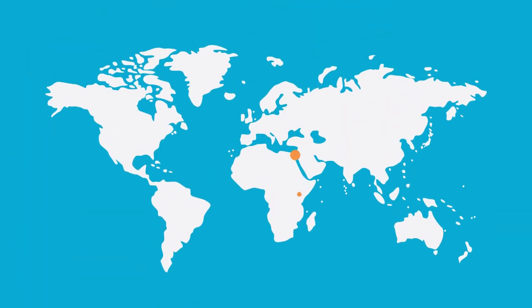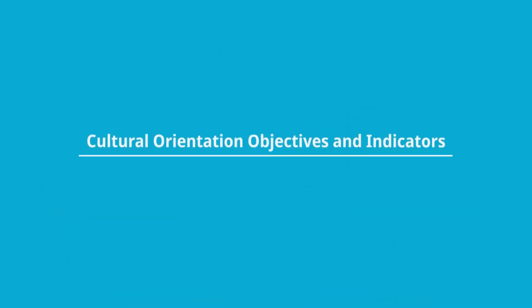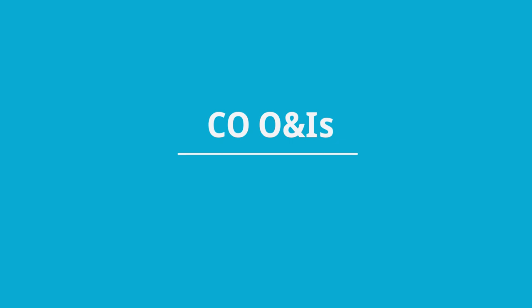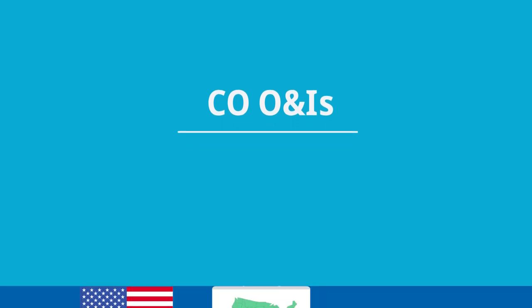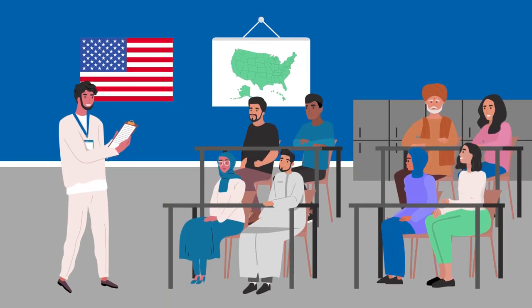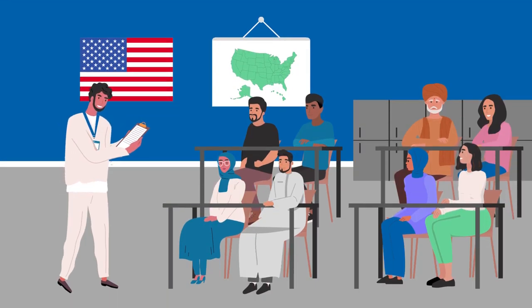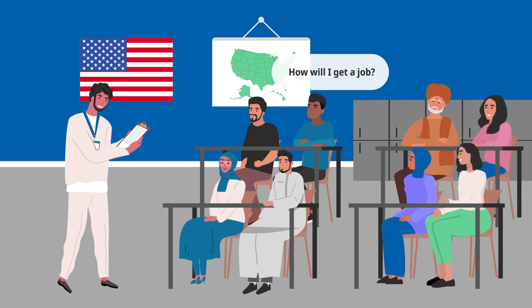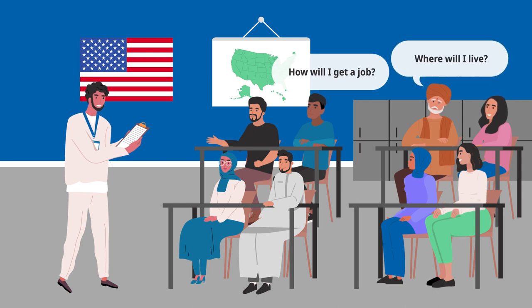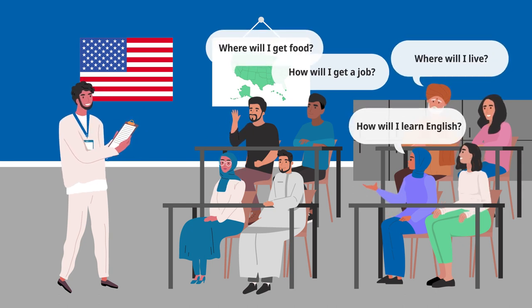CO takes place overseas and domestically. The Cultural Orientation Objectives and Indicators, also called the CO O&I's, help us prioritize what to teach. They clearly outline what a refugee is expected to learn and be able to do by the end of cultural orientation.